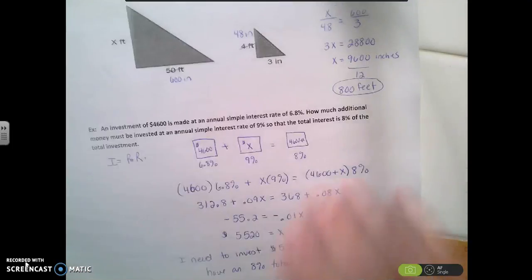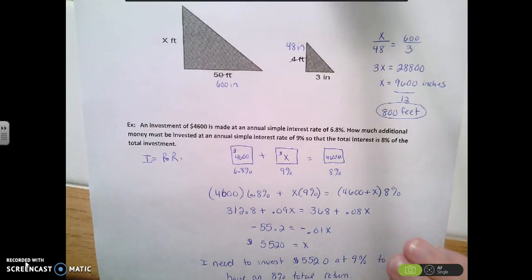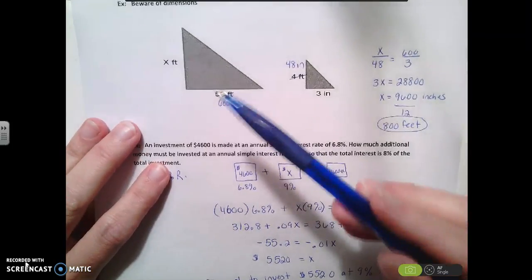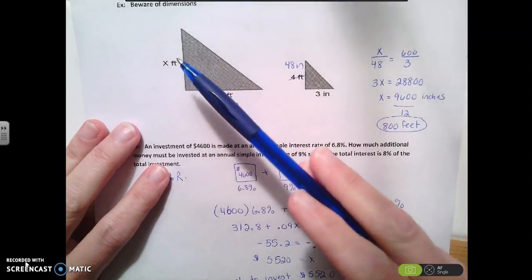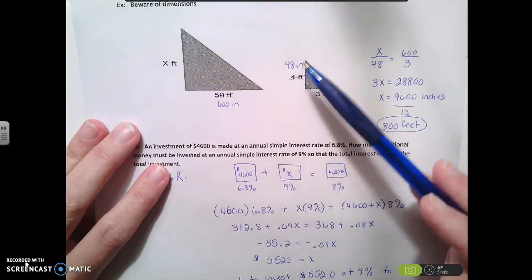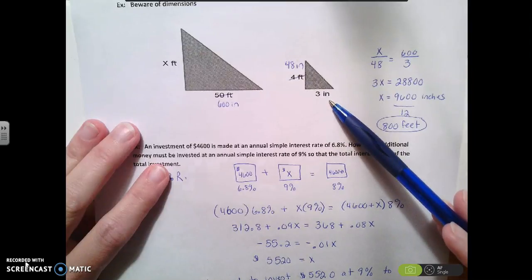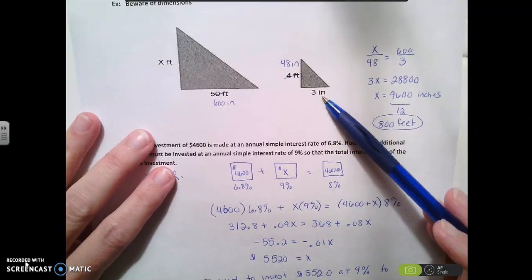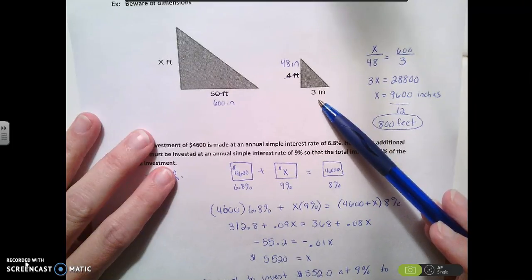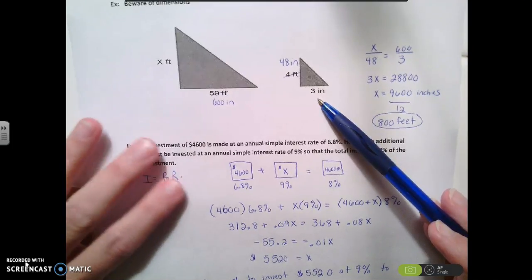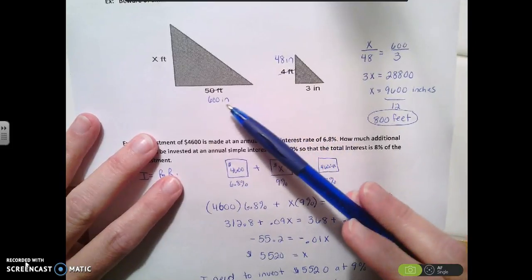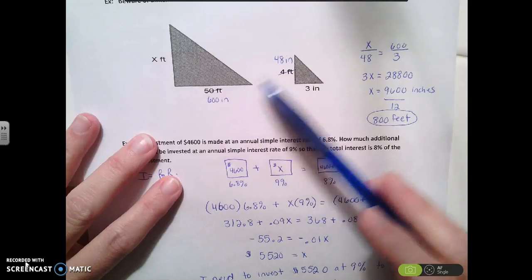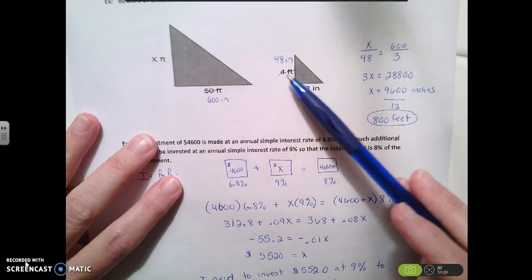Okay, our next problem. So this one is a similar triangle problem. So if you look at this, you've got to be aware about the dimensions, because they're talking about feet and feet and feet, and then all of a sudden inches. So you can't just set up the proportions. Now we could convert this inches to feet, and then work it out that way. But what I did is I converted the feet to inches. So I got 600 inches here, and I got 48 inches here.